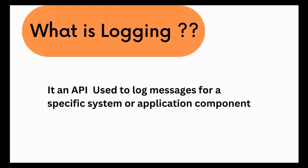Let's start by understanding what logging is and why it is required. By definition, it is an API used to log messages for a specific system or application component. Simply put, when you are running some transaction in your code and you want to know where your code broke, you can add logging statements that get printed in your log file. You can then track at what point your code broke and backtrack the transaction to find where the error came from.